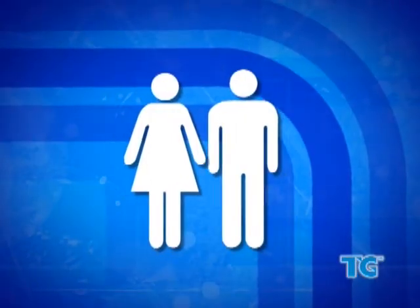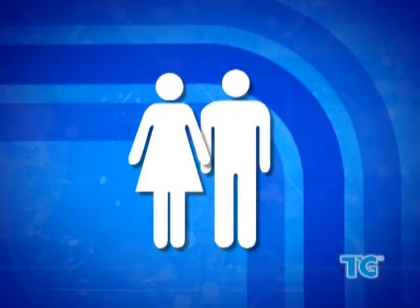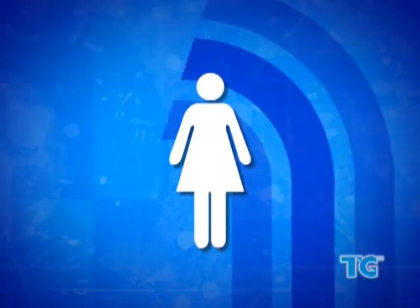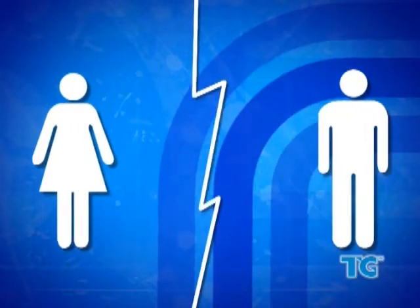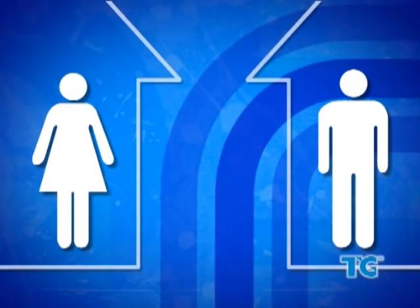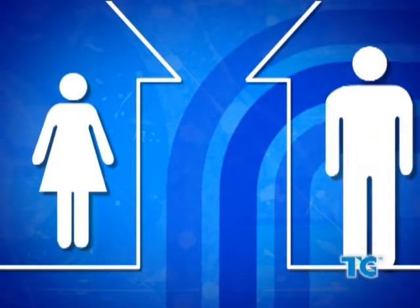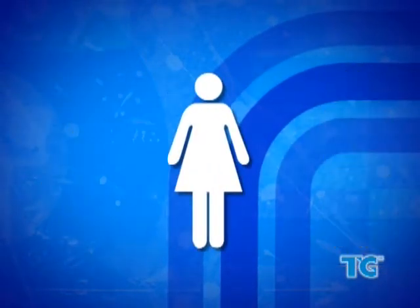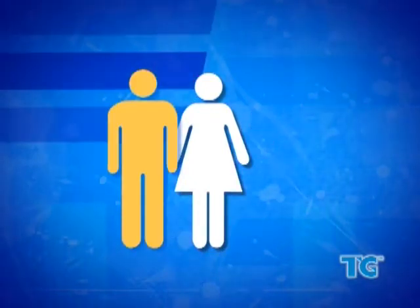If your mom and dad are still married to each other, you will include information from both of them on the FAFSA. If you have one parent — say your mom is single or widowed — then you would include only her income. If your mom and dad are divorced or separated, then there are two questions to consider. First, who do you live with more, your mom or your dad? If it's your mom, then include her income. If she has remarried, also include information about her spouse.